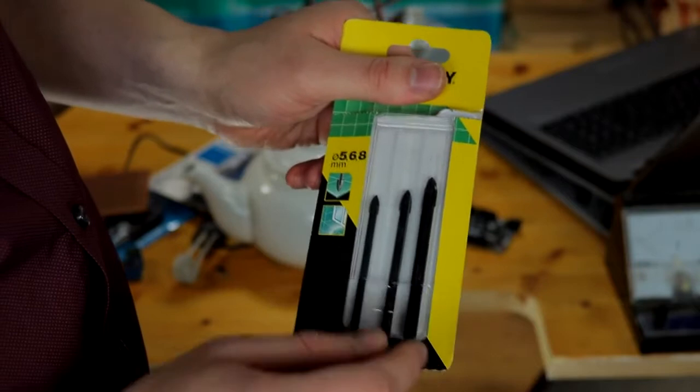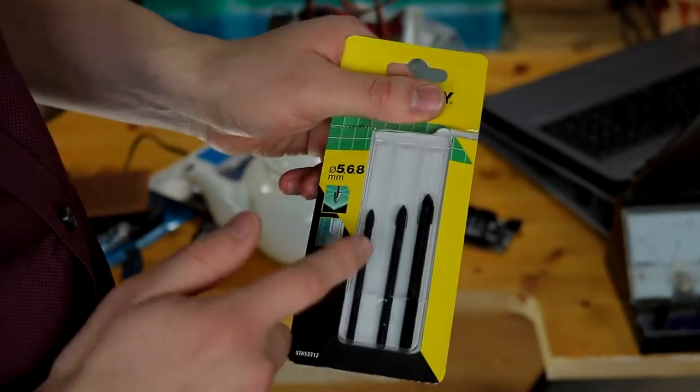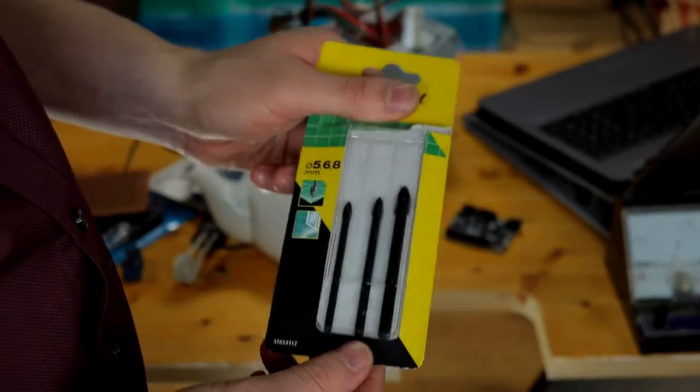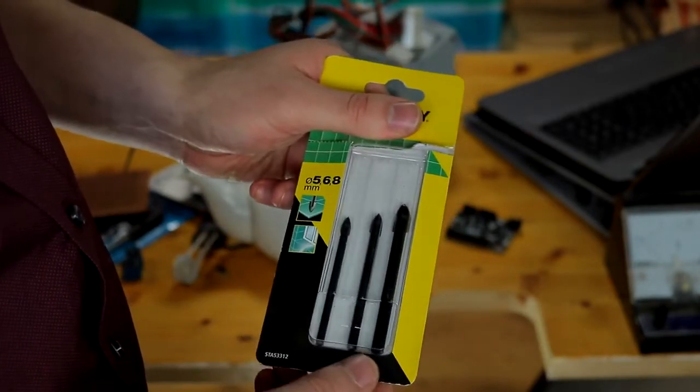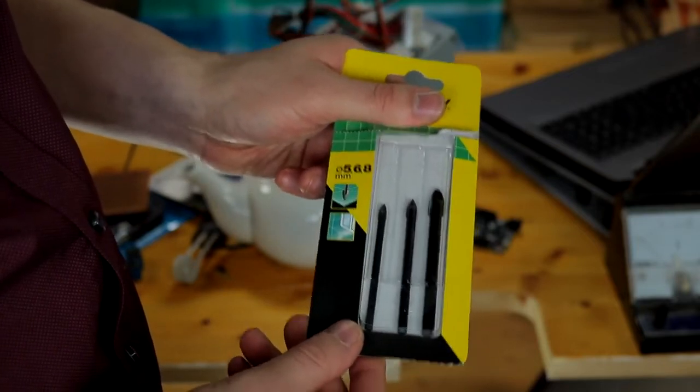Now you'll also need some tile cutting bits, this is so we can drill a hole in the teapot and make the hole a bit bigger so the wires will fit through. I've got a set of three here. I have no idea if it's going to work but, like I said, hope for the best.